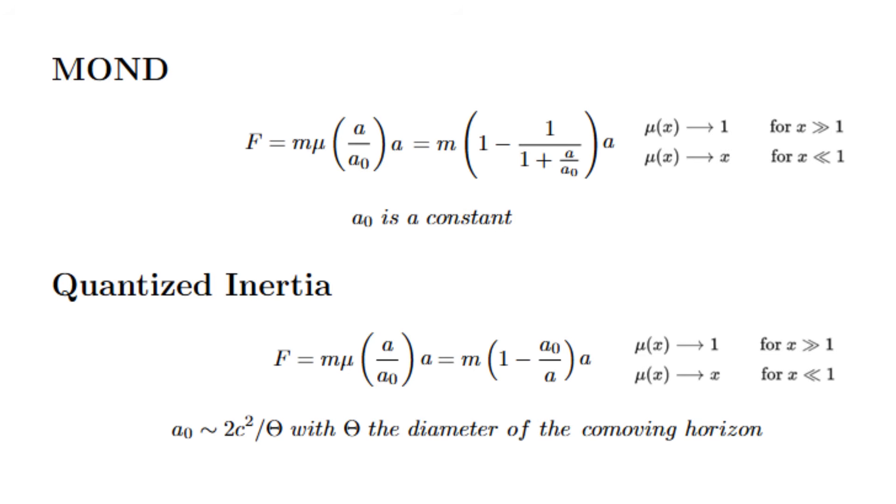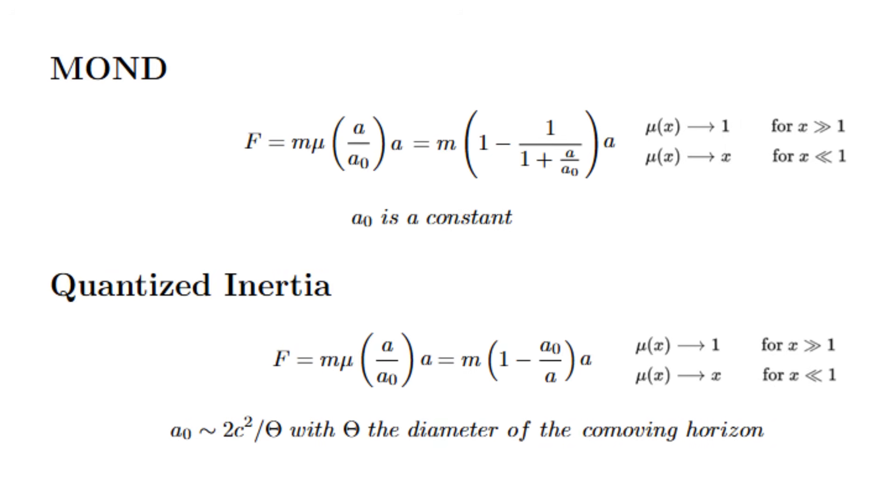In MOND this acceleration scale is a constant, and in Quantized Inertia it is a varying parameter with the radius of the co-moving horizon, that is, the particle horizon or the size of the observable universe.